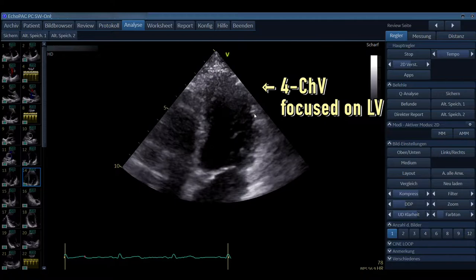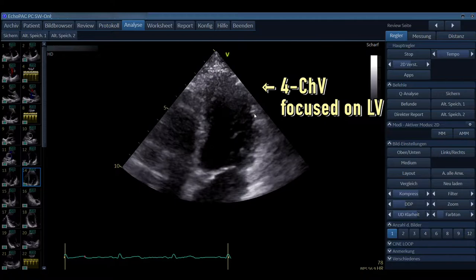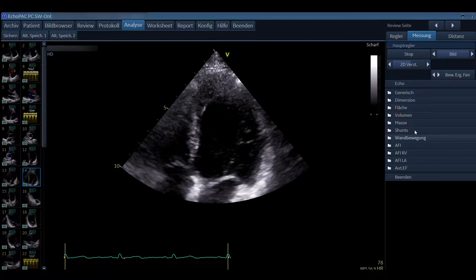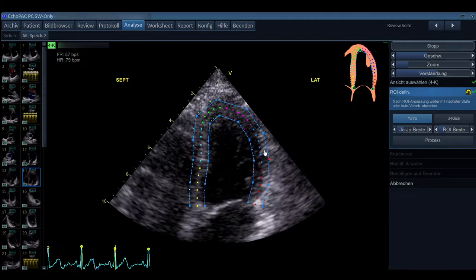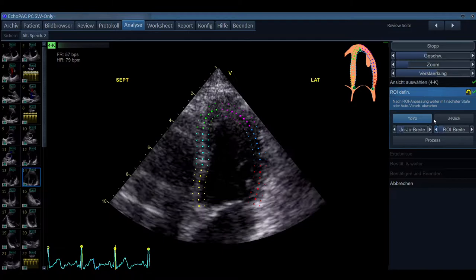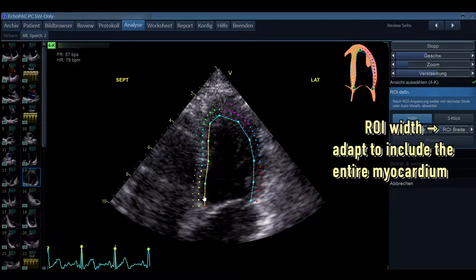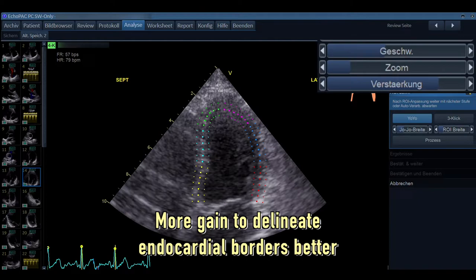You can delineate the endocardial borders quite nicely, but still we can adjust it a little bit. We again do the automatic imaging and it places this region of interest on our field of view. Now we can adjust the ROI width so that it is optimal. We can also simply turn up the gain a little bit to even delineate the endocardial borders better. So this is better for tracing and better to see.